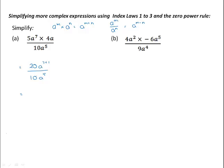We can also simplify the coefficients. 10 goes into 10 once and into 20 twice, leaving us with 2a to the 8 divided by a to the power 5. When we're dividing terms with the same base, we subtract the powers, and a to the power 8 take 5 would be a to the power 3. So this expression simplifies to 2a to the power 3.